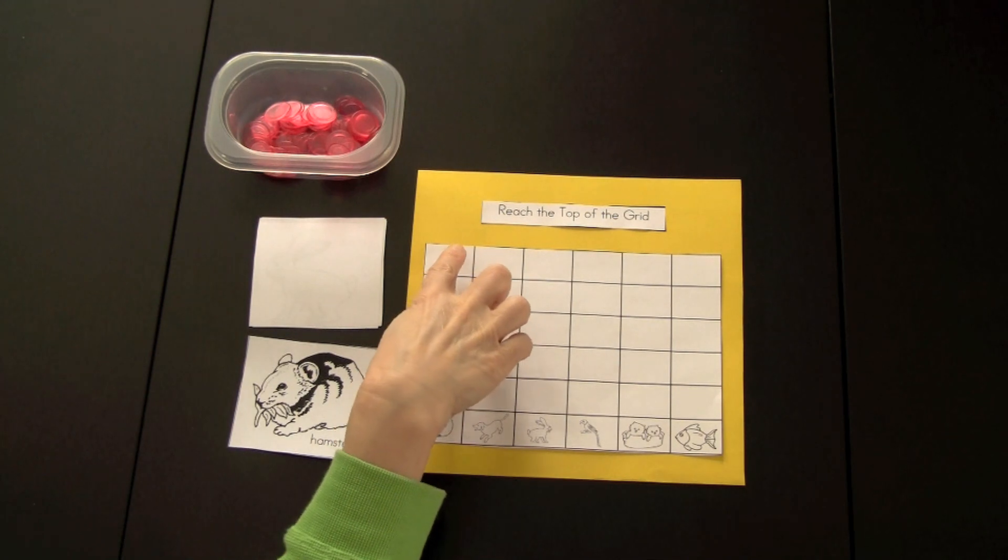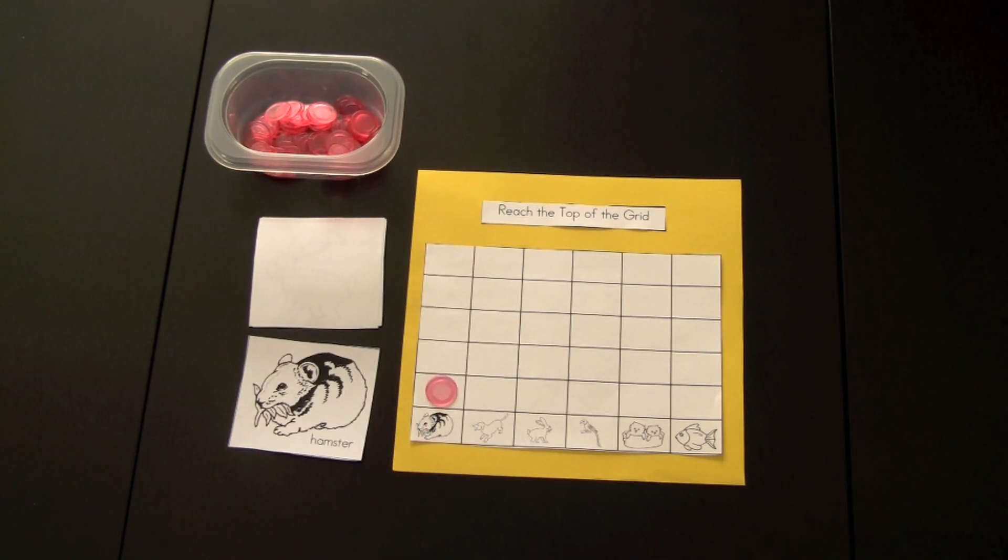The game would continue until one of the grids has reached the top. And after that, they'd have to determine which one was chosen the most, which one was chosen the least, or were there any pictures that had an equal amount.